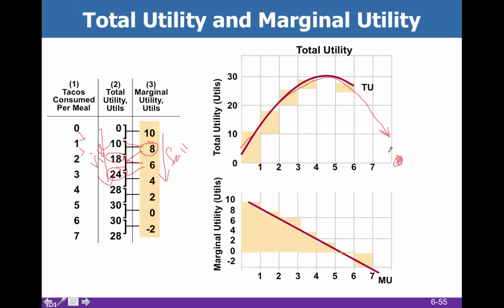Eventually, you can even get total utility down to 0. You could basically eat so many tacos that all of the happiness you gained is erased because you now feel so terrible. And likewise, your marginal utility goes down to 0. When your marginal utility is 0, that's when you're going to be at your peak of total utility.